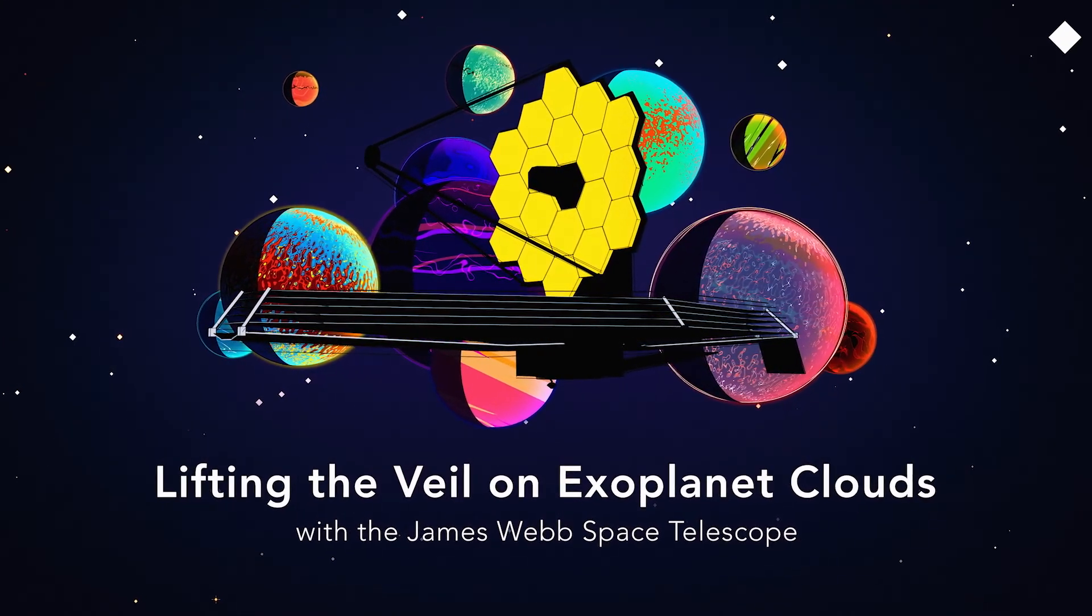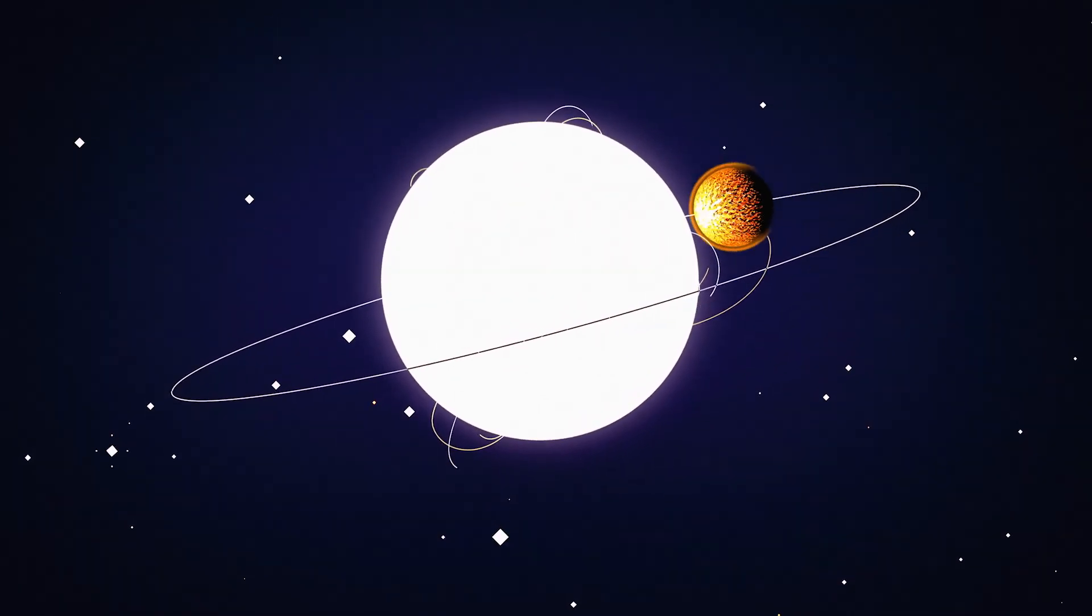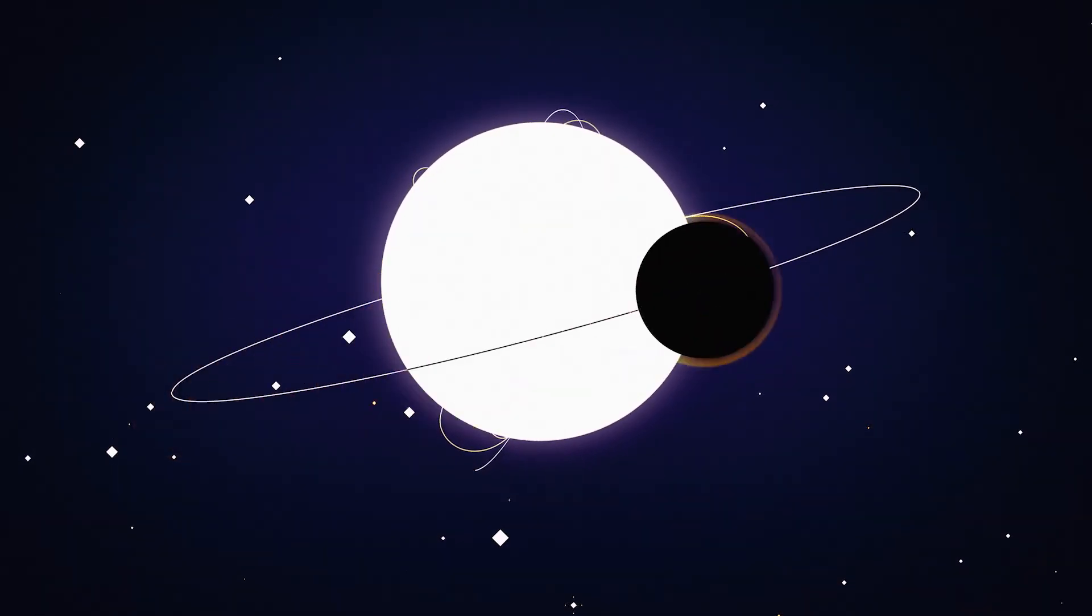So think of all the stars that you see in the night sky and imagine planets like our own orbiting around them. Those are exoplanets. An exoplanet is a planet that orbits another star other than the Sun.